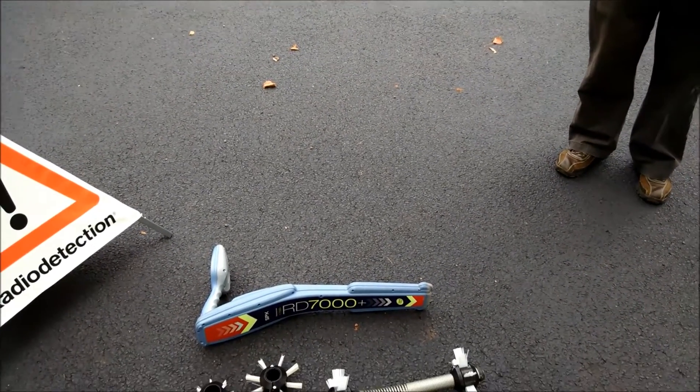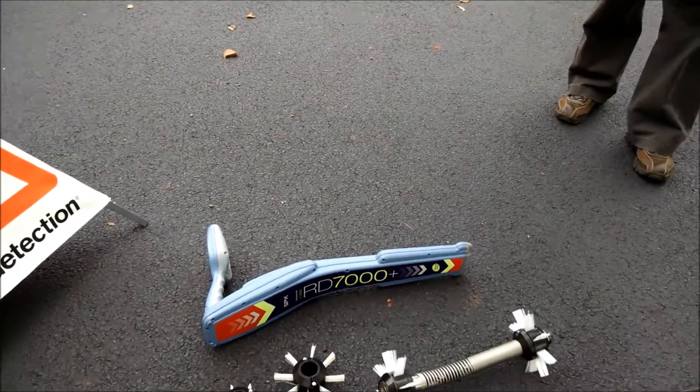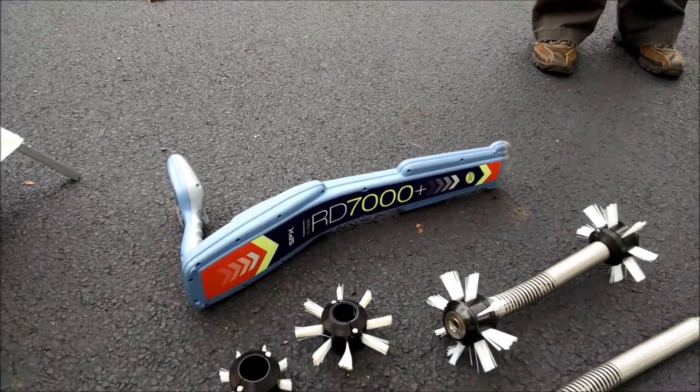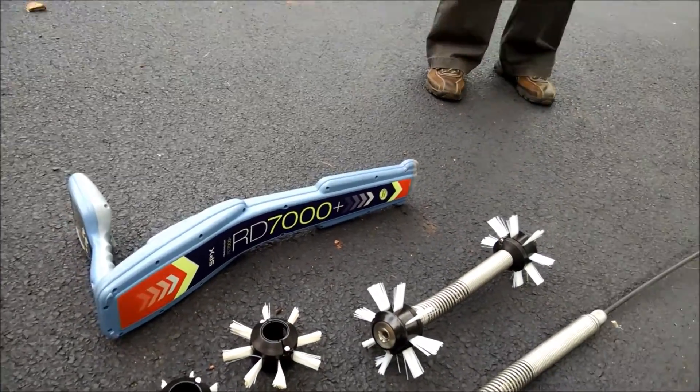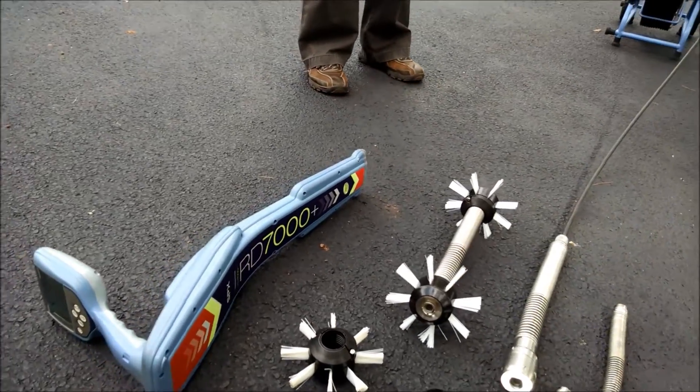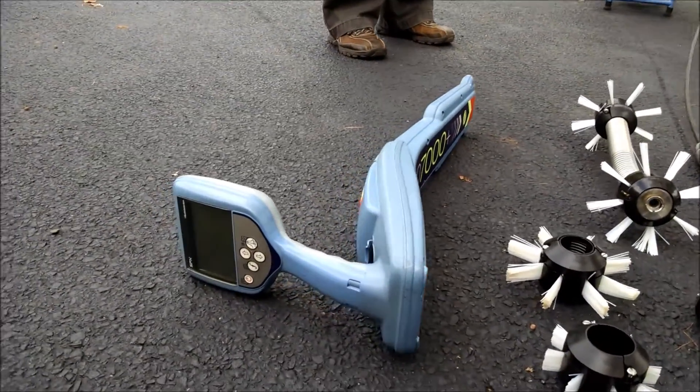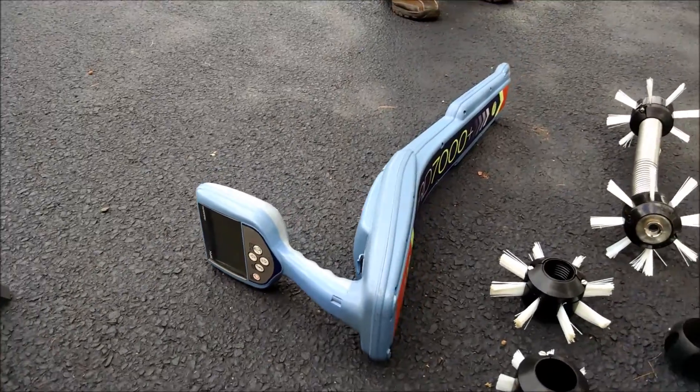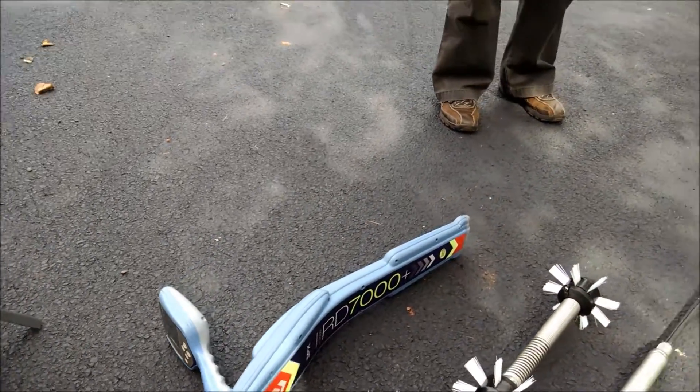Finally, we have the RD-7000 locator. Using the RD-7000, we can accurately determine the location and the depth of the camera head inside the pipe.